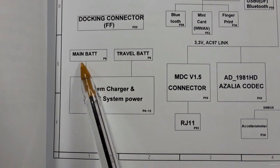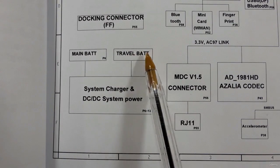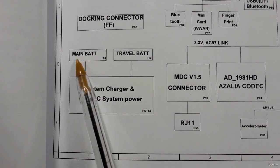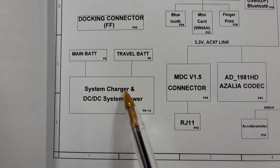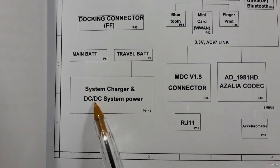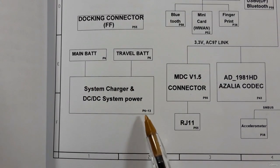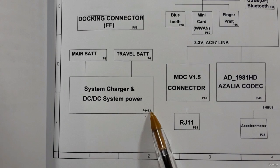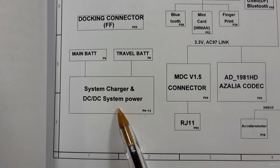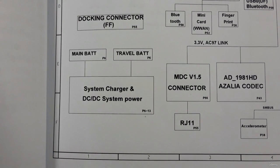We also have the main battery and travel battery. The main battery is on page 6. The system charger and DC-to-DC system power circuits are on pages 6 to 13, covering all power circuits: the charger IC circuit, battery circuit, 3V and 5V circuits, 1.8V and 0.9V circuits, the VCC core circuit or CPU circuit, and so on.